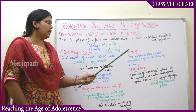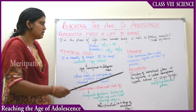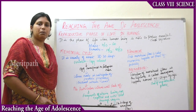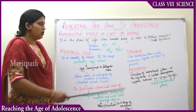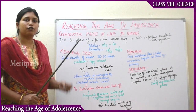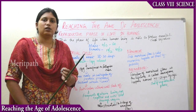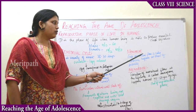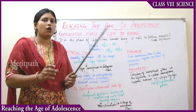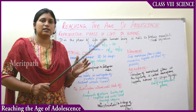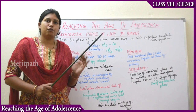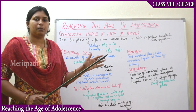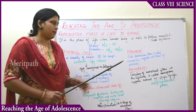Next is menarche. Menarche means the first menstrual flow of life in females. This happens at the onset of puberty in your teenage years. The first onset of menstrual flow is called menarche. It occurs at the onset of puberty and occurs only in females — in the female reproductive system.